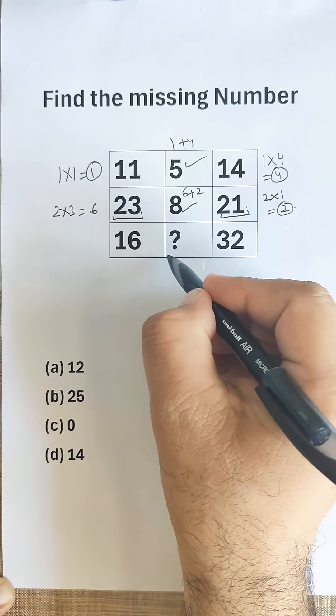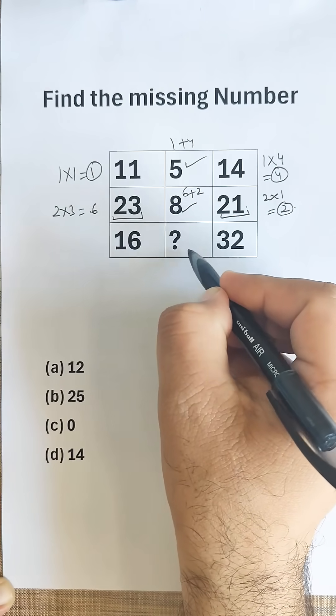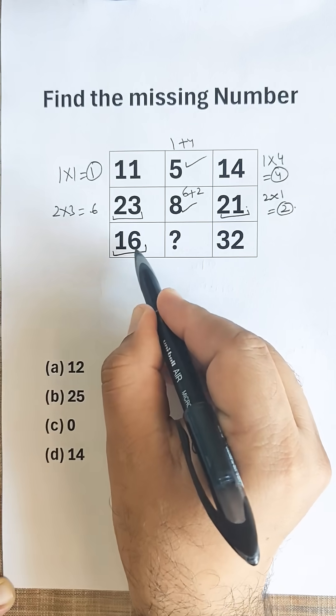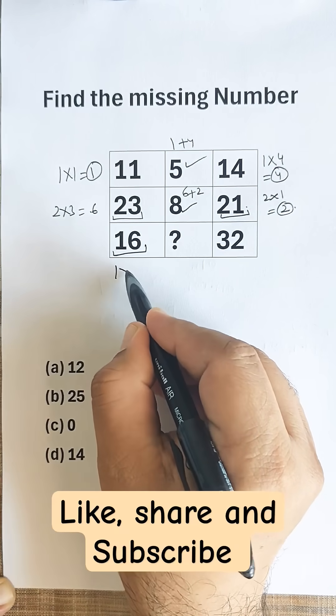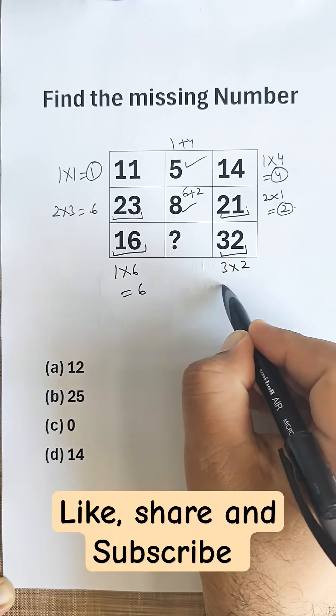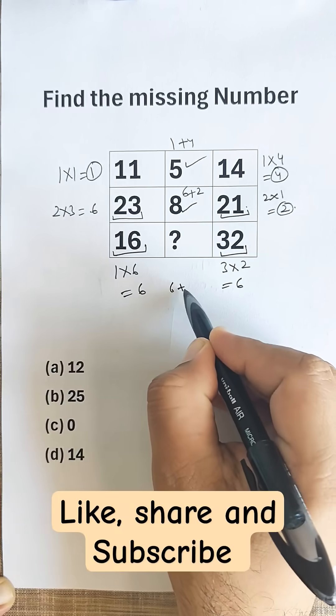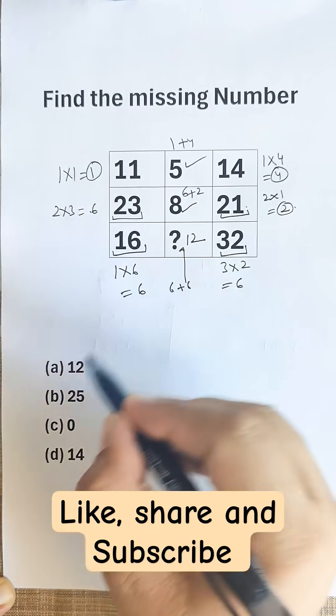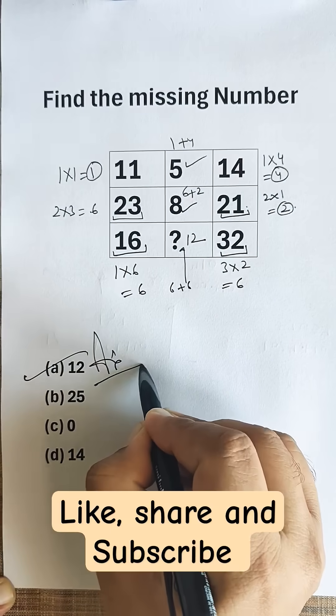In the similar way, we will be finding this missing number. This missing number will be equal to, if we find the product of digits of 16, 1 into 6 is 6, and product of digits of 32, 3 into 2 is 6. And if we add 6 and 6, we get 12. Option A is the correct one.